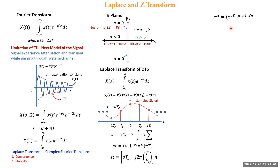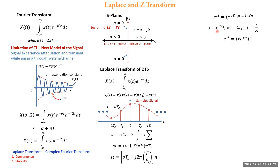Therefore the e^(st) term becomes e^(σT_s)^n · e^(j2πfn), where 2πf can be replaced by ω. Hence the final equation for e^(st) = r · e^(jωn), where r = e^(σT_s), which is a real term. This new term r · e^(jω) forms the equation of a circle, where r is the radius and ω is the angle of the vector with respect to the x-axis.